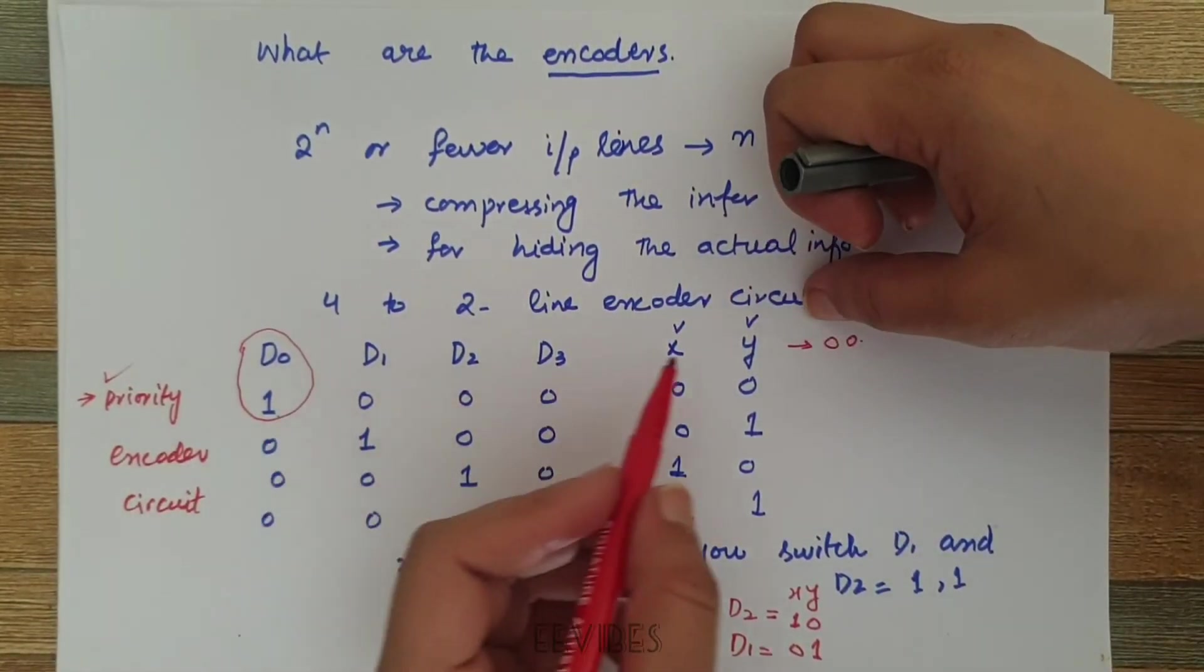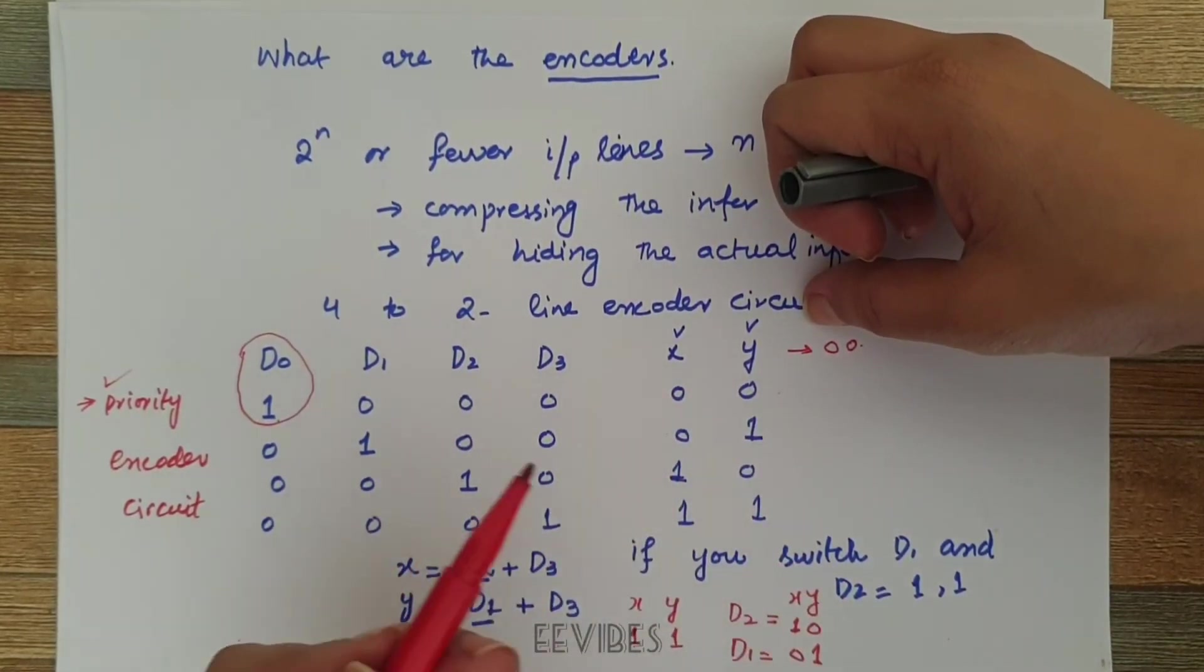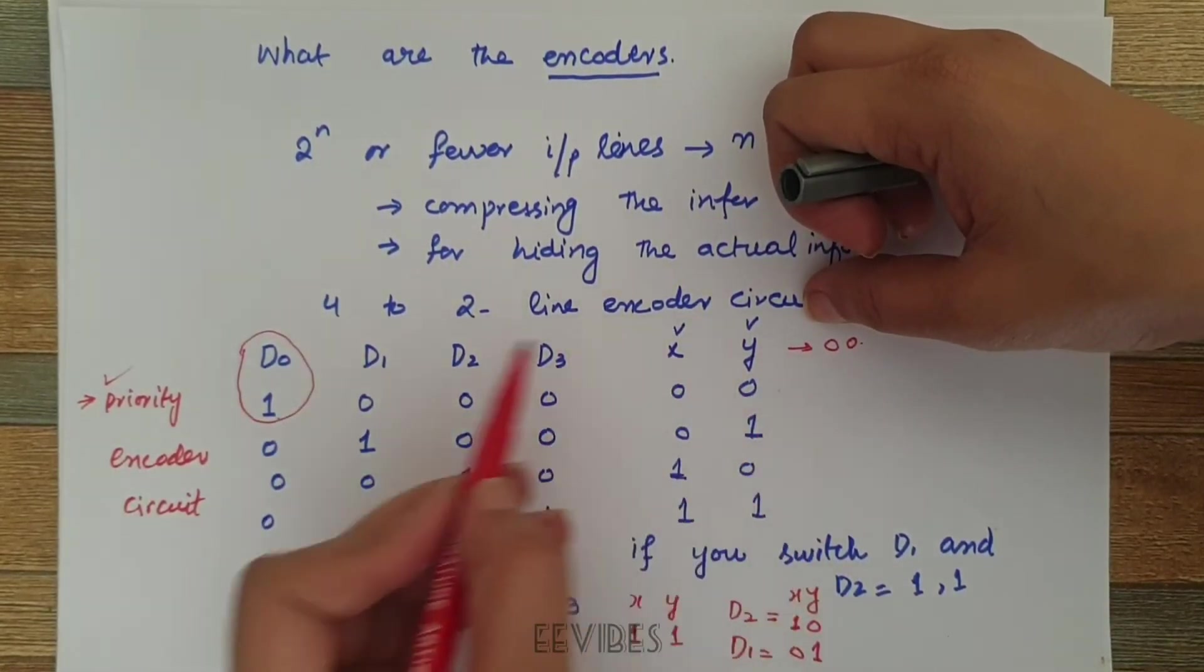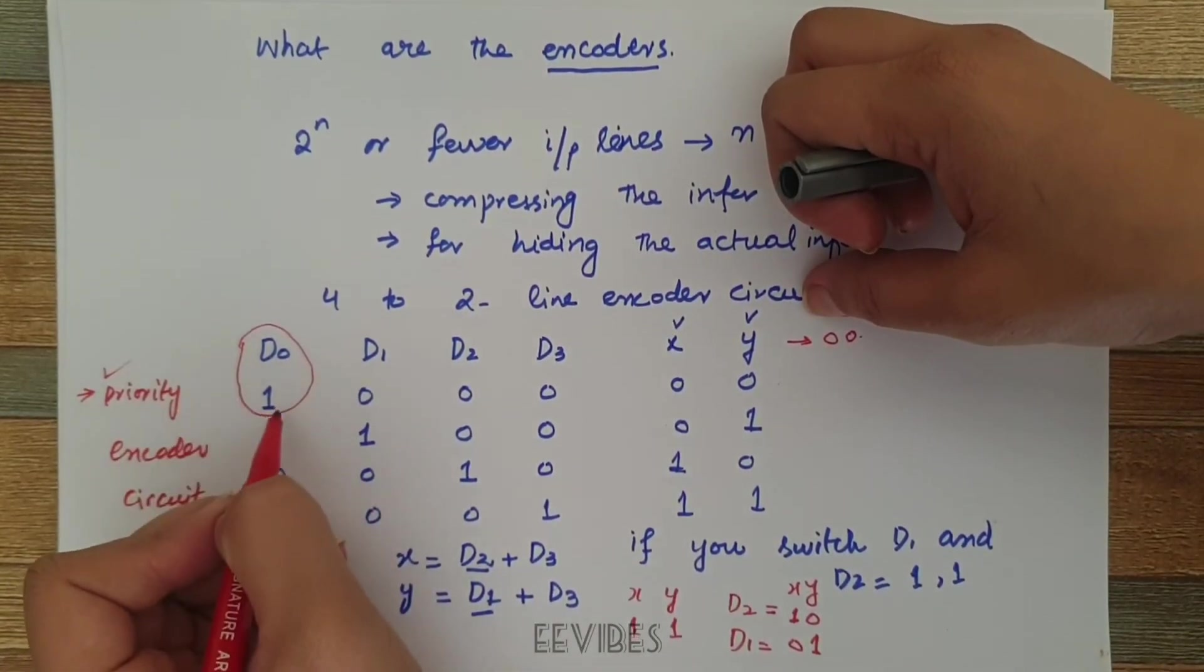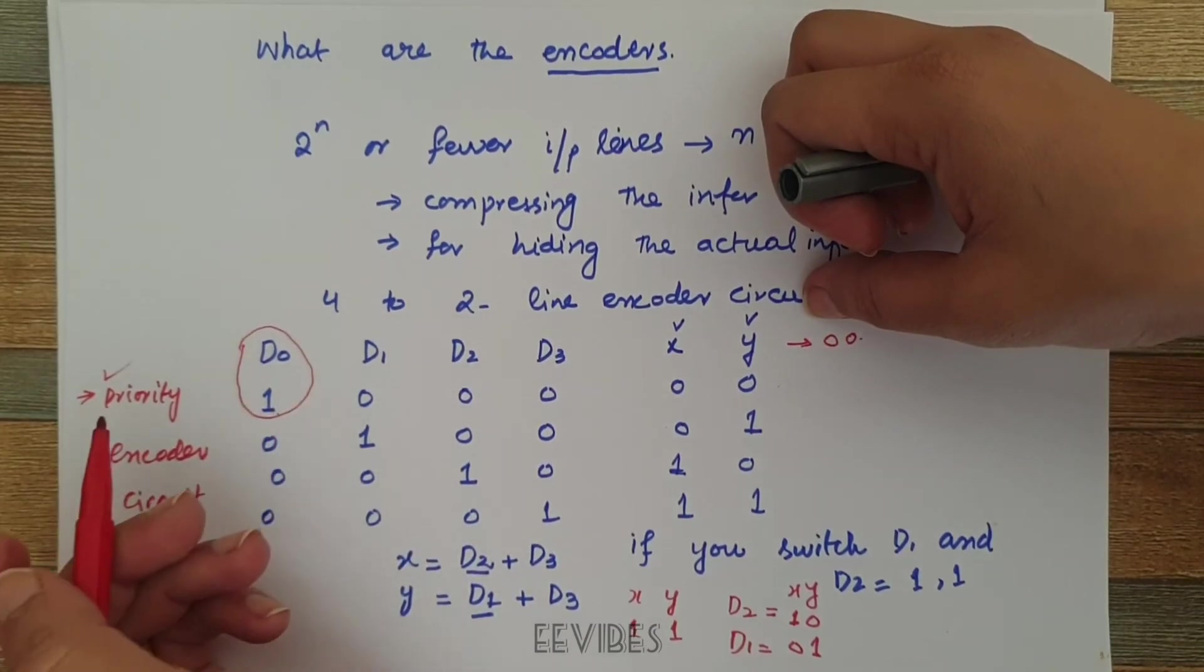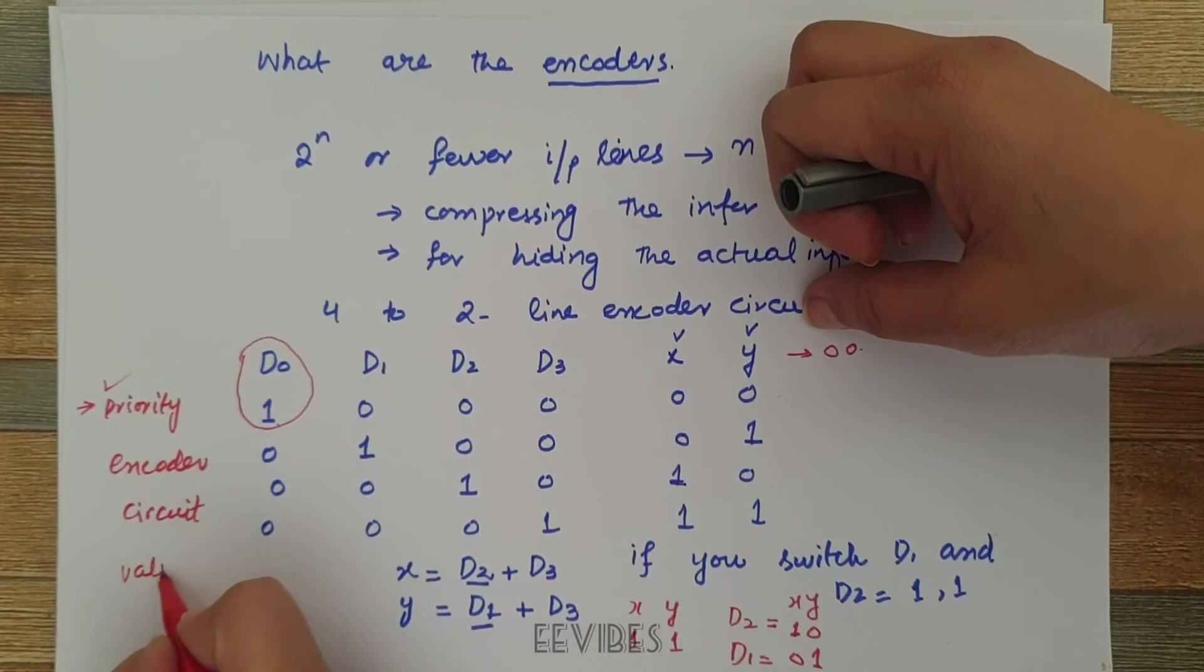The second problem, where you are getting the output equal to 0, 0 when the circuit is off, which is actually corresponding to D0 equal to 1, we will solve this problem by using a valid input.